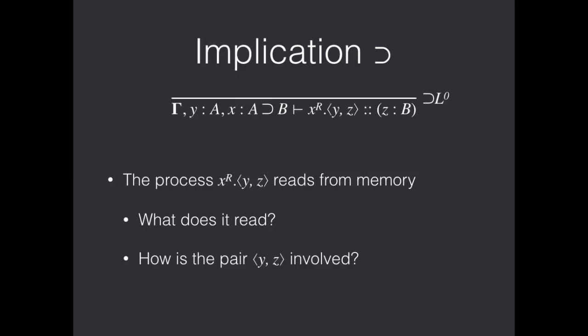Now we move on to our next connective, implication. And here we'll first look at the reading rule, because this is our other axiom. So, this process, the X superscript R dot brackets Y, Z reads from memory. It goes along with the left rule, so according to our operational principles, it should read. And, well, we've labeled X with an R, so that should be another good indicator that it's reading.